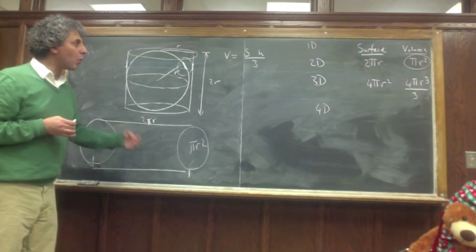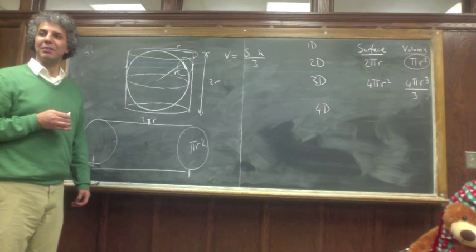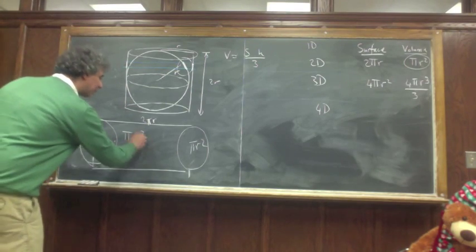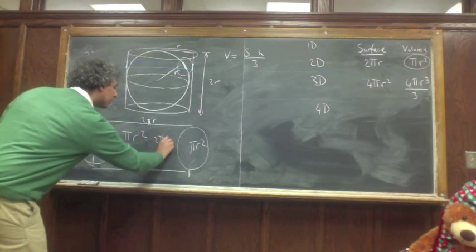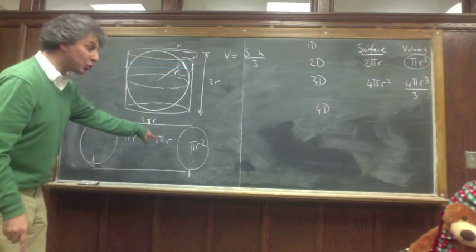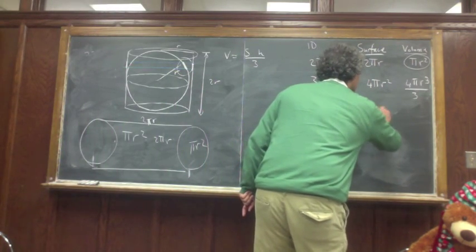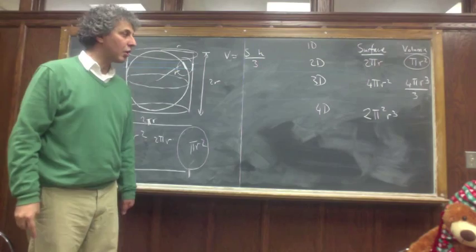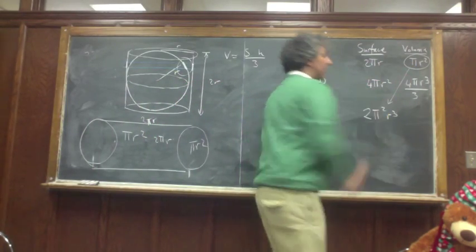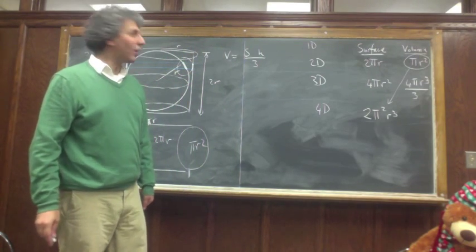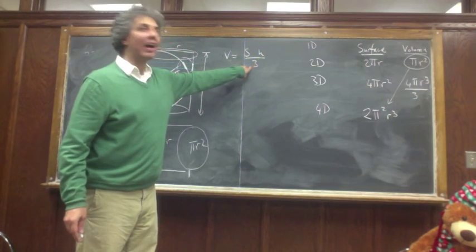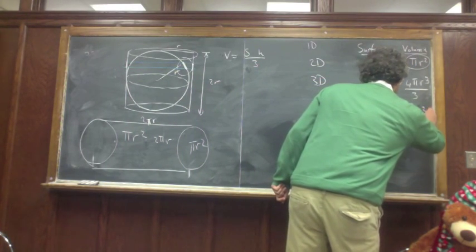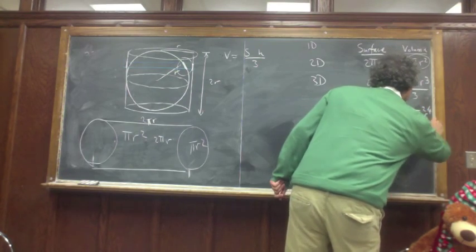So then I have to ask the question: what is the surface area of this 4-dimensional cylinder? Well, the answer is pi r squared times 2 pi r — the perimeter — so that is 2 pi squared r cubed. If I know the surface, then I know the volume. Volume is surface times height divided by 4 — we are in 4 dimensions. Height is r, so this is going to be 2 pi squared r to the 4 divided by 4.